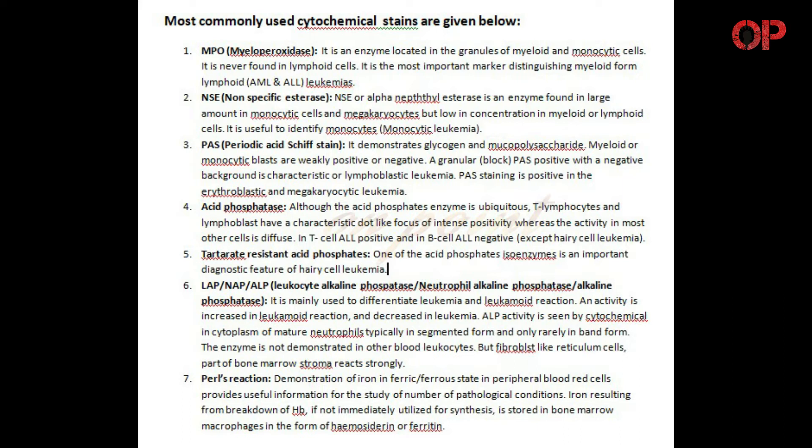4. Acid phosphatase - although the acid phosphatase enzyme is ubiquitous, T-lymphocytes and lymphoblasts have a characteristic dot-like focus of intense positivity, whereas the activity in most other cells is diffuse. In T-cell ALL it is positive, and in B-cell ALL it is negative, except in hairy cell leukemia.